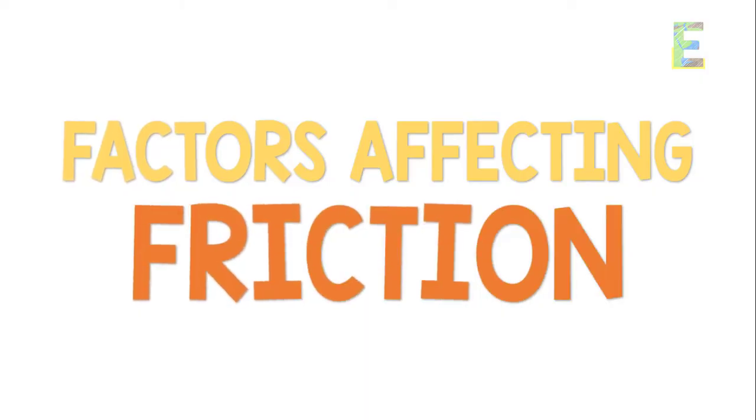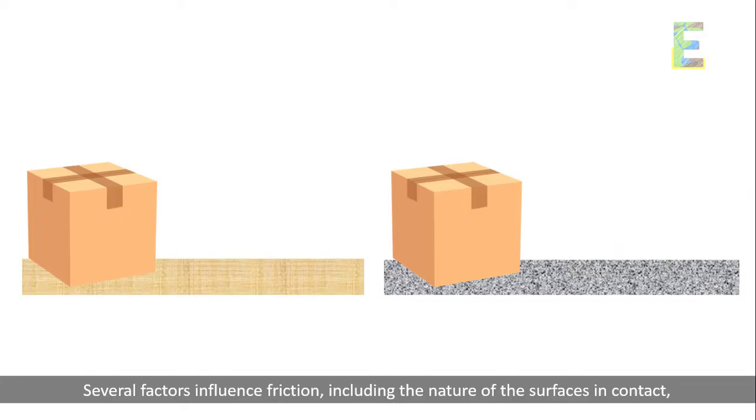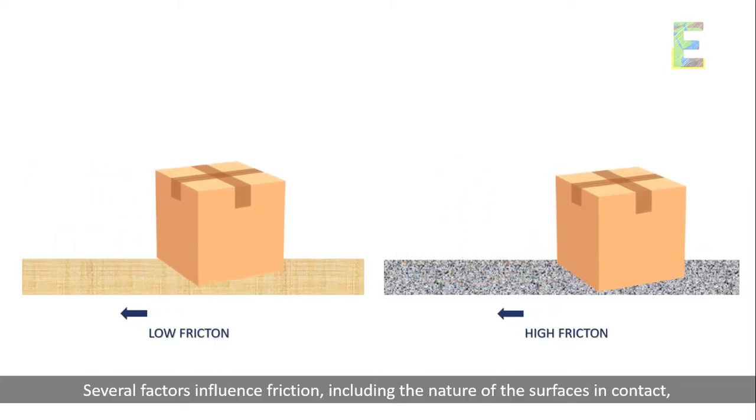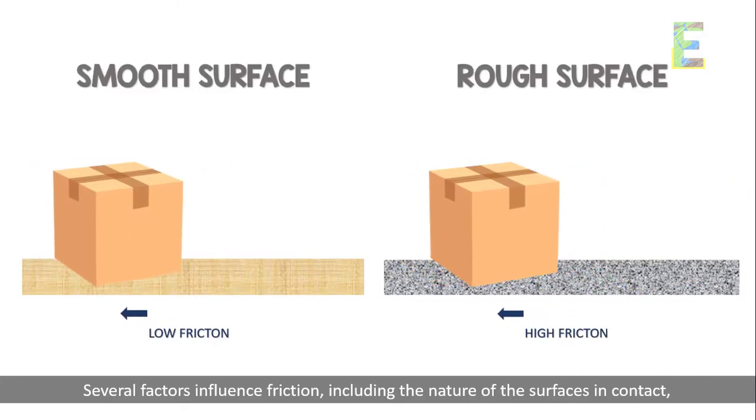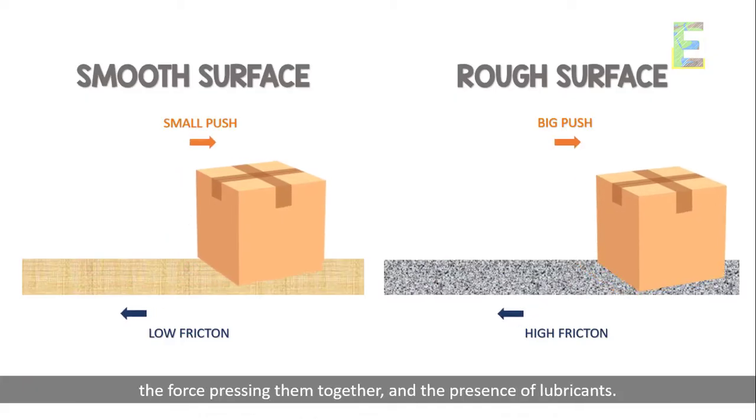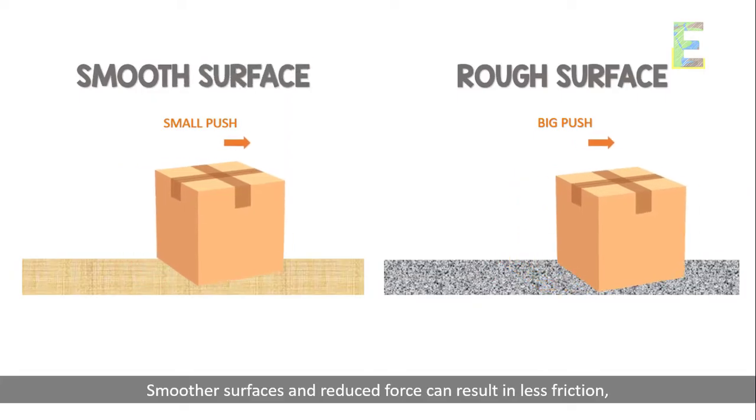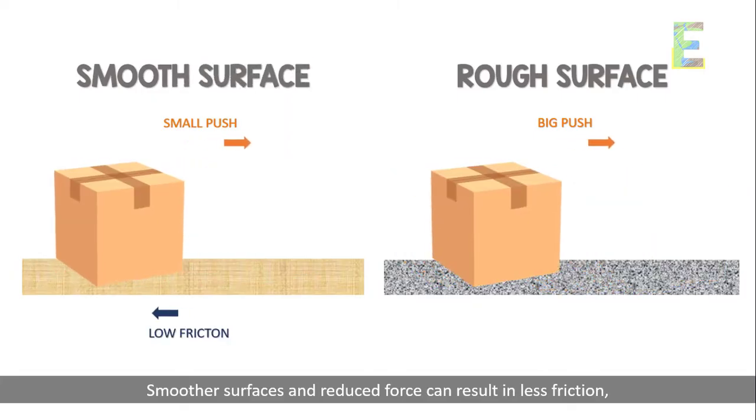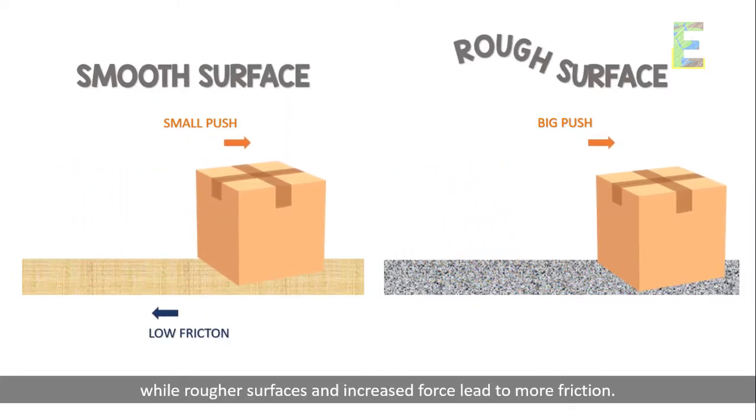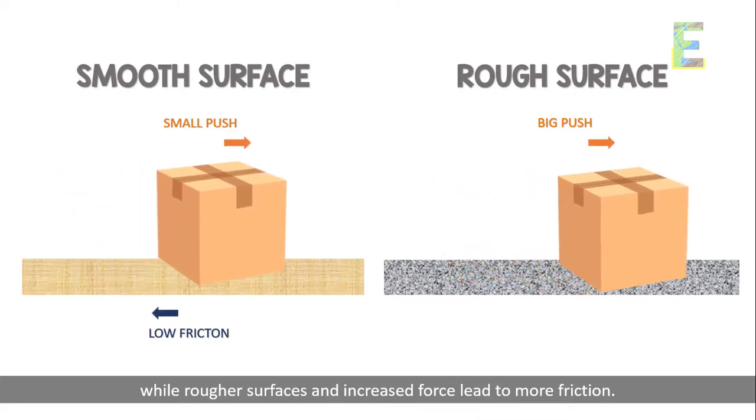Factors affecting friction. Several factors influence friction, including the nature of the surfaces in contact, the force pressing them together, and the presence of lubricants. Smoother surfaces and reduced force can result in less friction, while rougher surfaces and increased force lead to more friction.